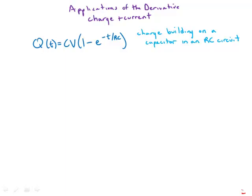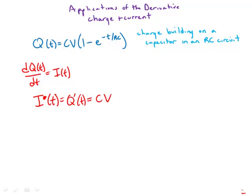It turns out that the derivative of charge with respect to time is current. And so you could be given this equation and be asked to find the current. Well, the current function, i(t) = Q'(t) = CV.